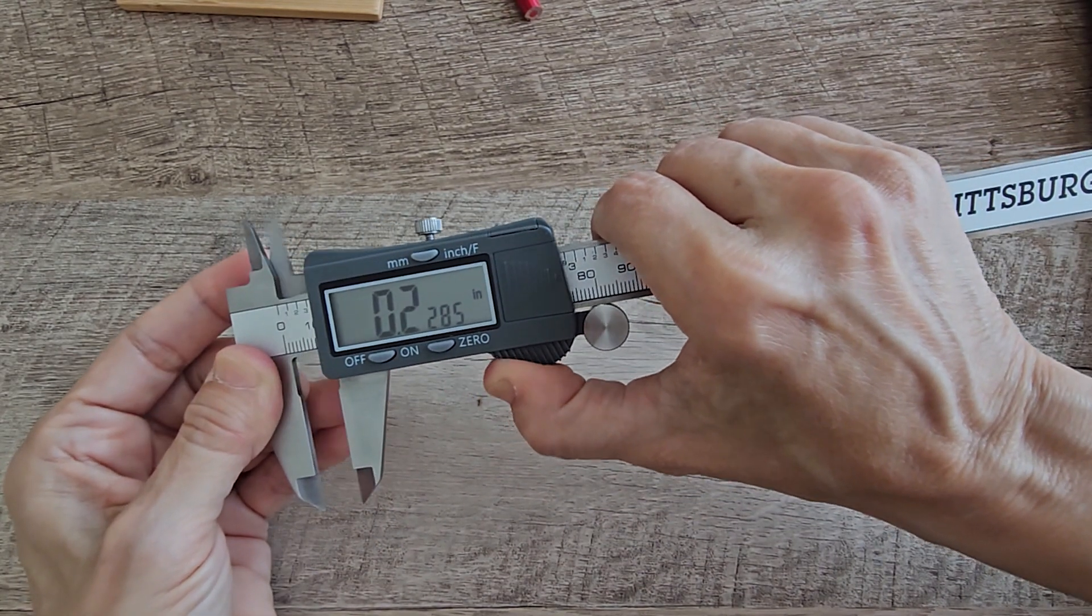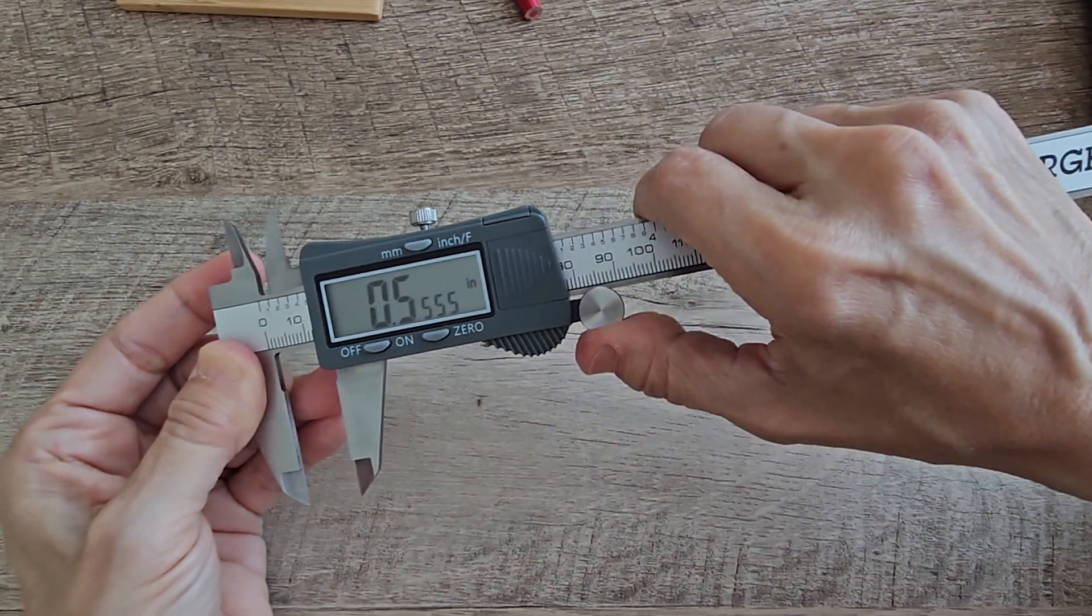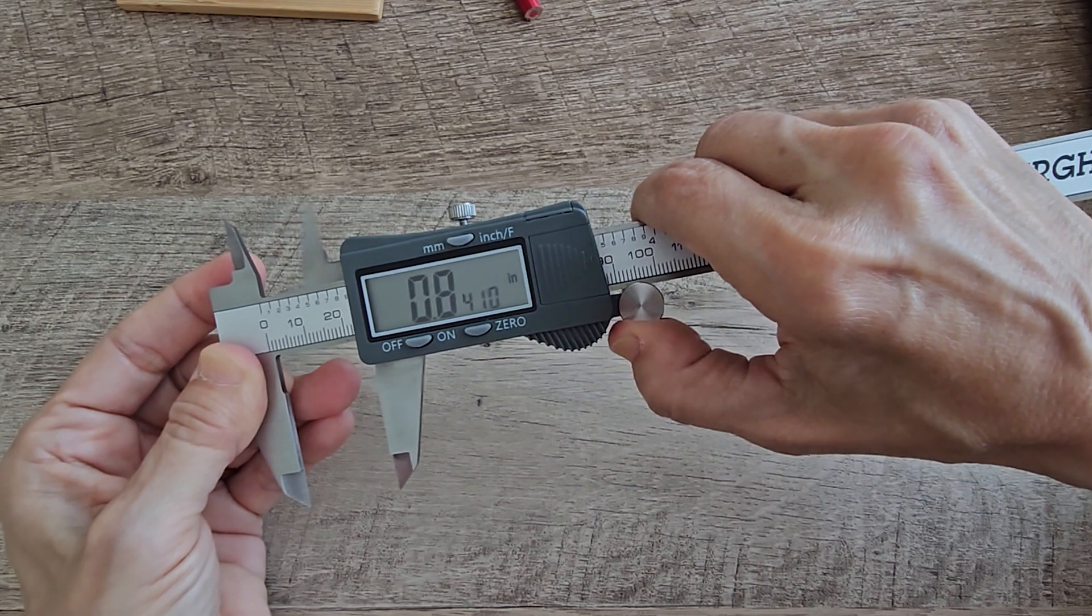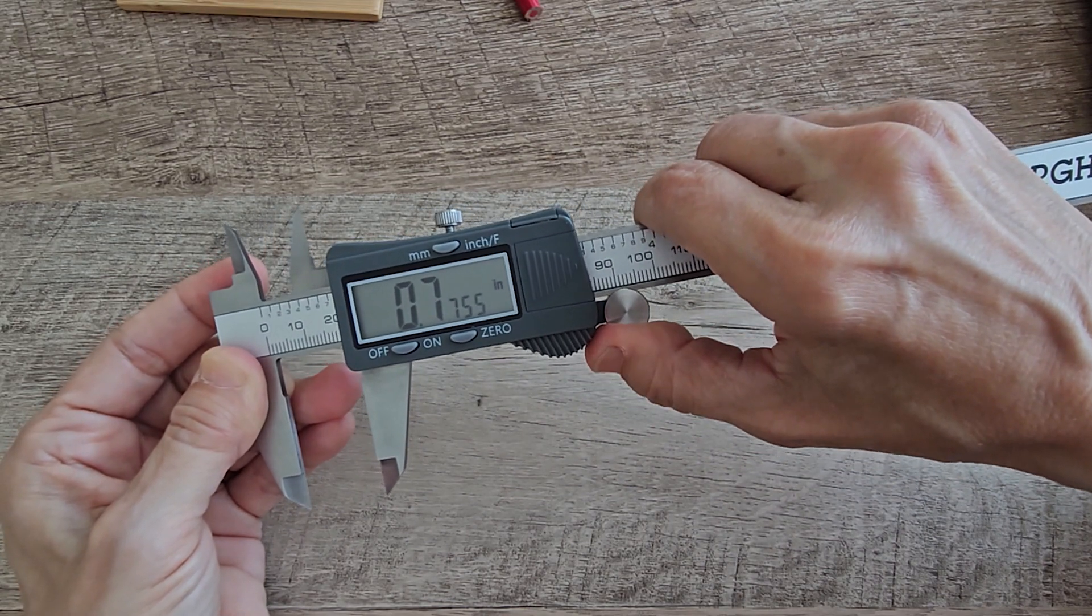There's a thumb slider here, and then there's a wheel for the smaller measurements when you get close.